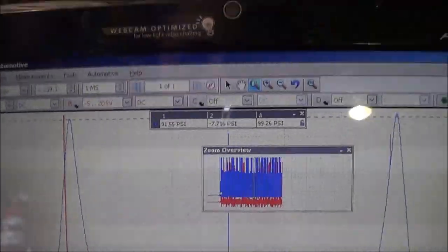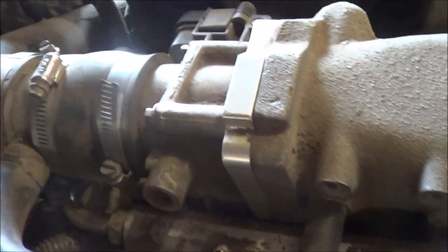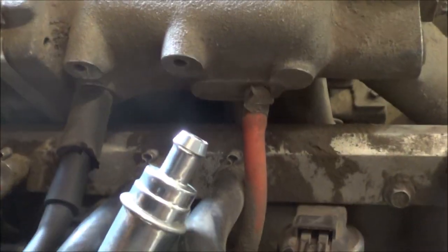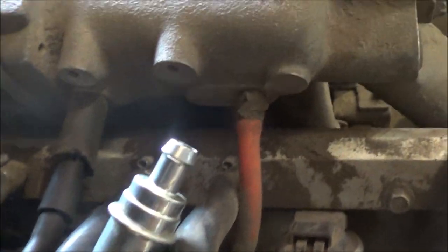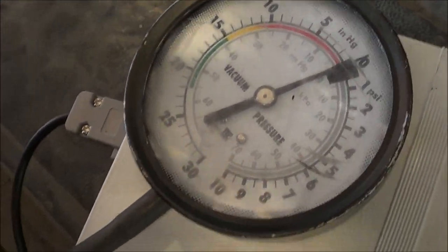Okay, so I hooked up my vacuum gauge right here to the intake manifold. You can see this is already past the throttle body, so it's still going to be directly measuring the vacuum on the intake manifold. So I'm going to crank the engine and focus you on the vacuum gauge.